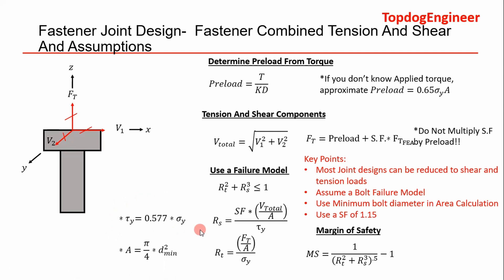Your bolt area is pi over 4 times the minimum bolt diameter squared. Your shear load ratio is your safety factor times total shear divided by bolt area, divided by the yield stress — using the von Mises criterion if needed. Your tension load ratio is total axial load divided by area, divided by yield stress. Once you have those, plug them into the margin of safety equation and calculate by hand. Key points: use the minimum bolt diameter in your area calculation, and I use a safety factor of 1.15.